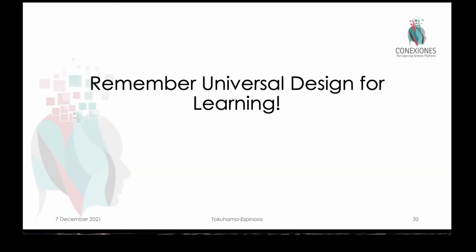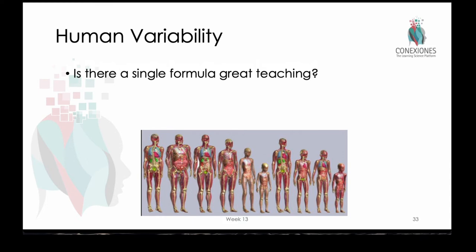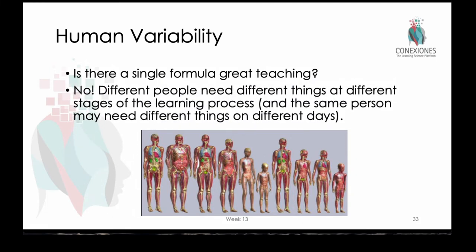Universal design for learning is one of the few attempts at using information from educational neuroscience — how the brain actually learns — and putting it into a design context: how do we create educational opportunities for all? One of its beauties is that it deeply appreciates human variability. This is why there's not one single way to be a great teacher, because there's no single way to be a great student. Students will come to us with all kinds of differences, and different people will need different things at different stages. Even the same person might need different things on different days based on their mood or what's going on in their lives.